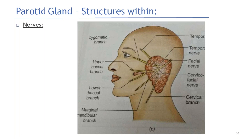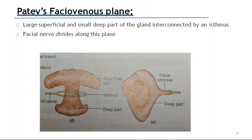We have to preserve the facial nerve during parotid surgeries. This is the fatty spatiovenous plane — large, superficial part and small, deeper part. The parotid has a superficial part (large) and a deep part (small), with an isthmus in between. The facial nerve divides along this parotid.